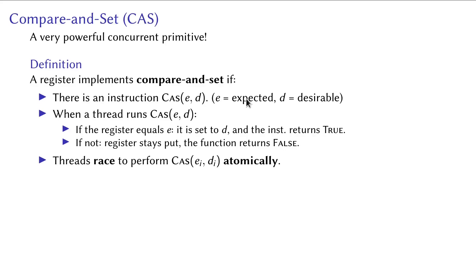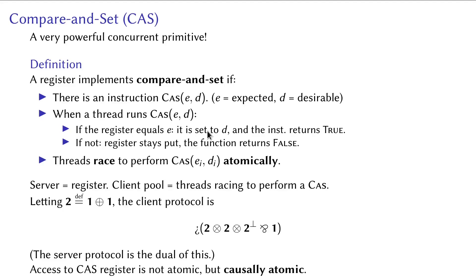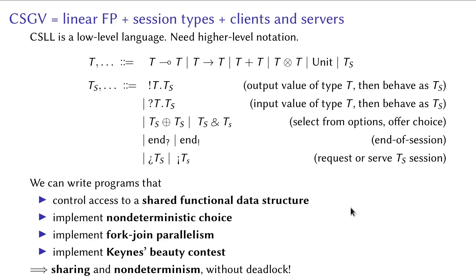Here is an example of what can be done in our system. CAS is a powerful and common concurrency primitive, formally defined as such. Here we consider CAS of a single bit for simplicity. We can use server to represent a CAS-capable register, and client pool to represent threads racing to perform a CAS. The client protocol will be defined as sending expected value, sending desired value, receiving the result of the CAS operation, and ending the session. Of course, the server protocol is the dual of that.